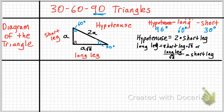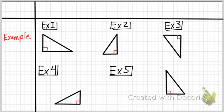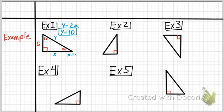Let's look at some examples for the 30-60-90 triangle. In example 1, we're given a short leg of 5 and we're trying to find the long leg and the hypotenuse. To find the hypotenuse: y equals 2A, and A equals 5, so y equals 10. Then x equals A times √3, so x equals 5√3.